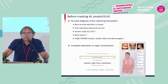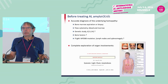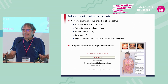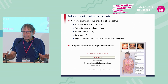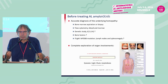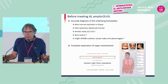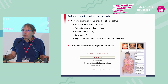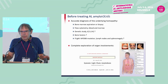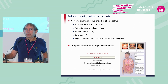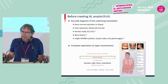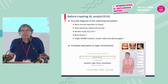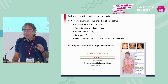Before treating, you have to get an accurate diagnosis of the underlying hemopathy. This is very important because the treatment is to kill the cells that produce the free light chain, so you have to really determine what those cells are — you do bone marrow assessment. Then you have to do a complete exploration of organ involvements, though I don't have time to develop that here.